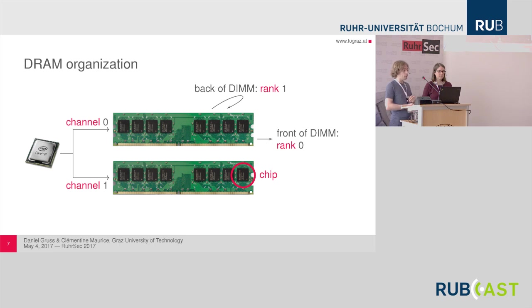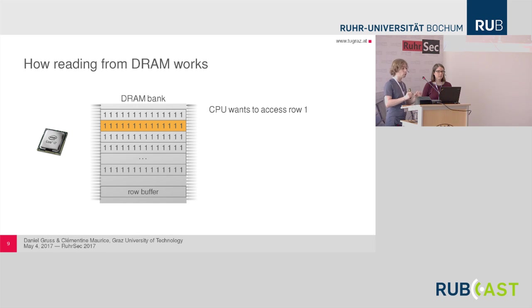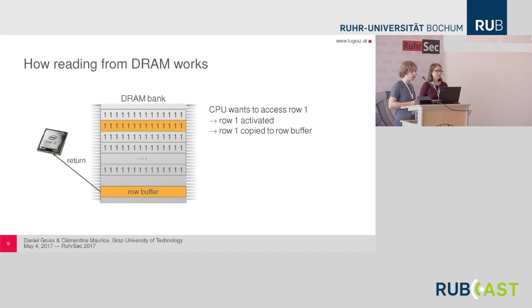Let's look at a chip instead. A chip is subdivided into multiple banks, and these banks are then subdivided into multiple rows. Each row is typically eight kilobytes and stores these eight kilobytes of single bits in physical DRAM cells. To access one of those rows, we have to activate the row, and when we activate it, it is copied to the row buffer. When the CPU wants to access row one, highlighted in orange, the row is first activated and then copied to the row buffer, and then the value from the row buffer is returned to the processor.